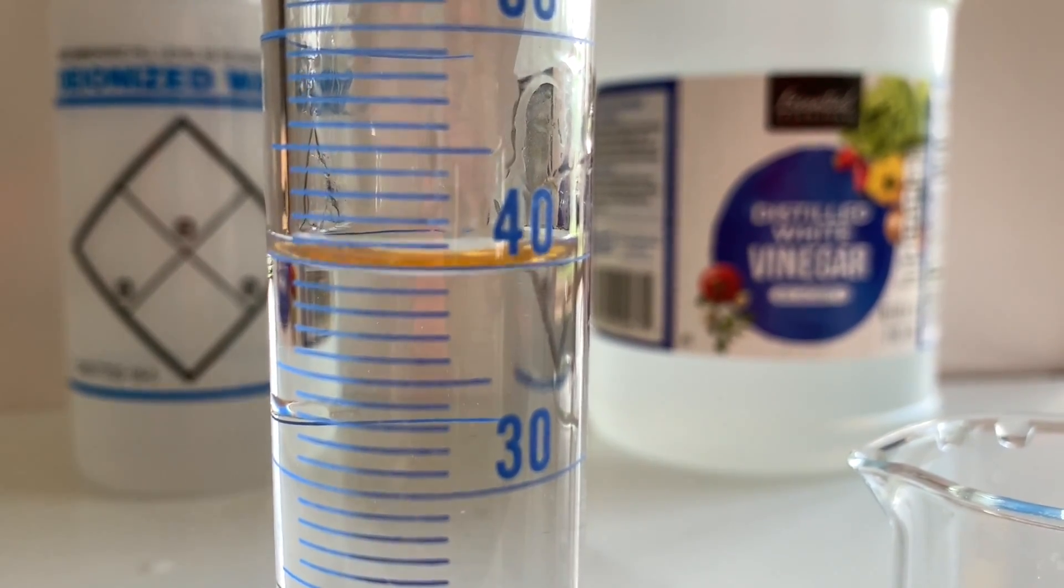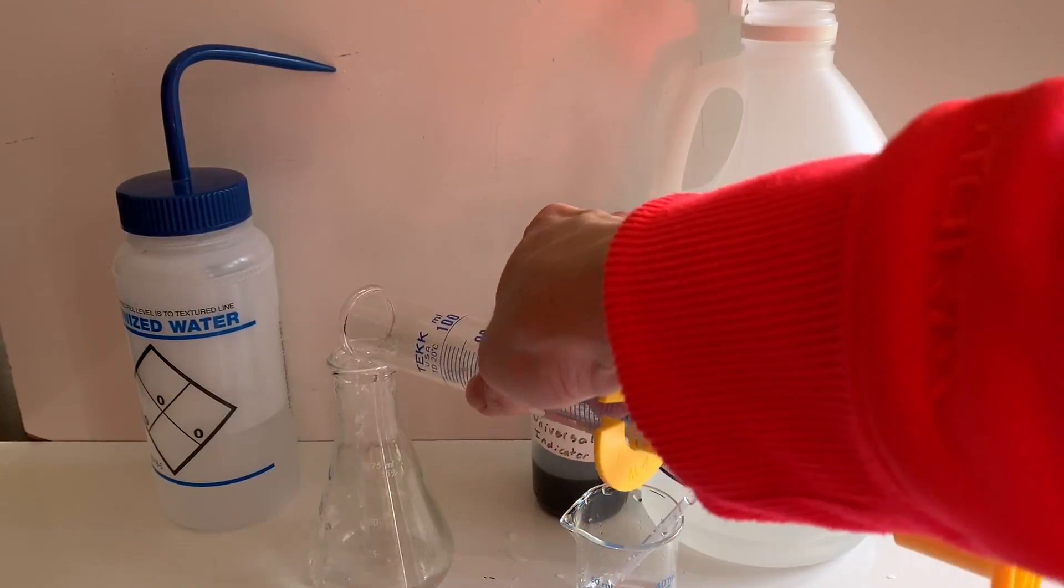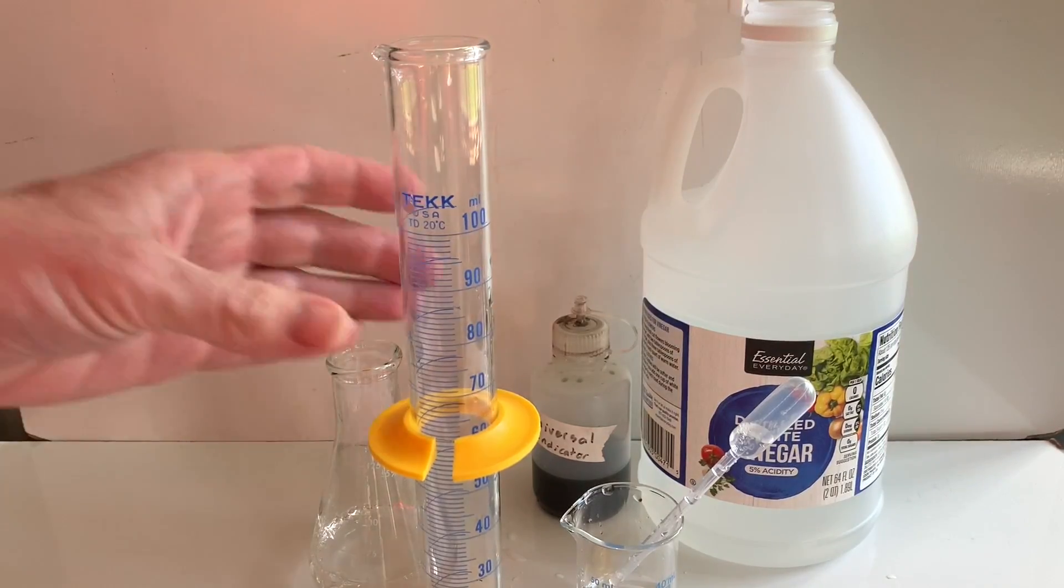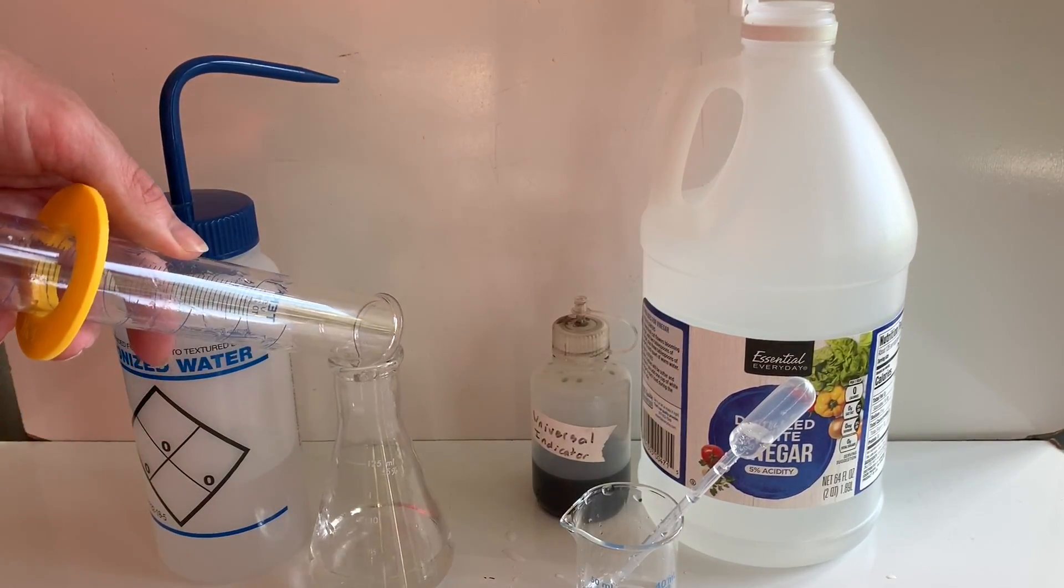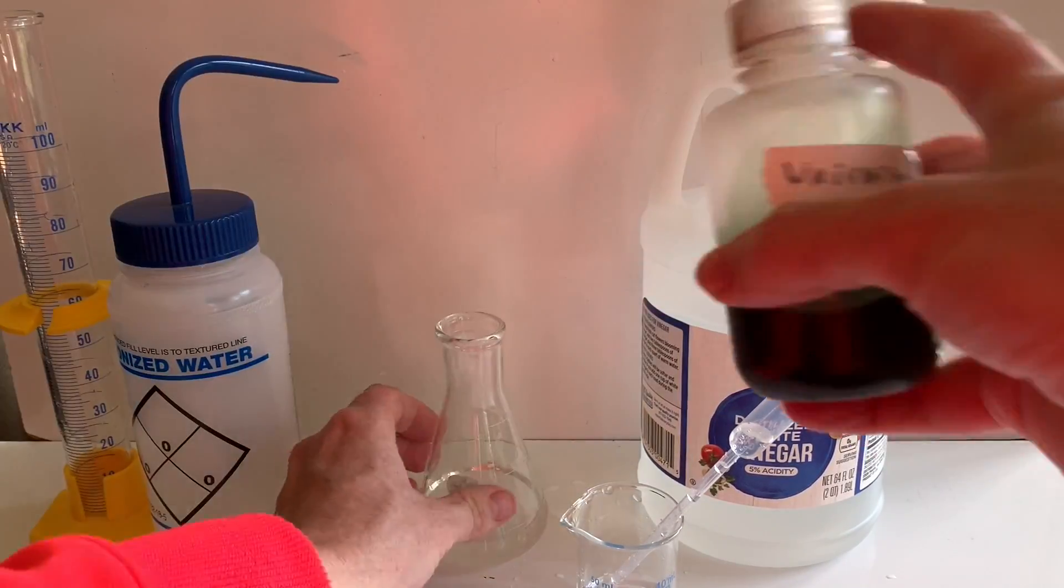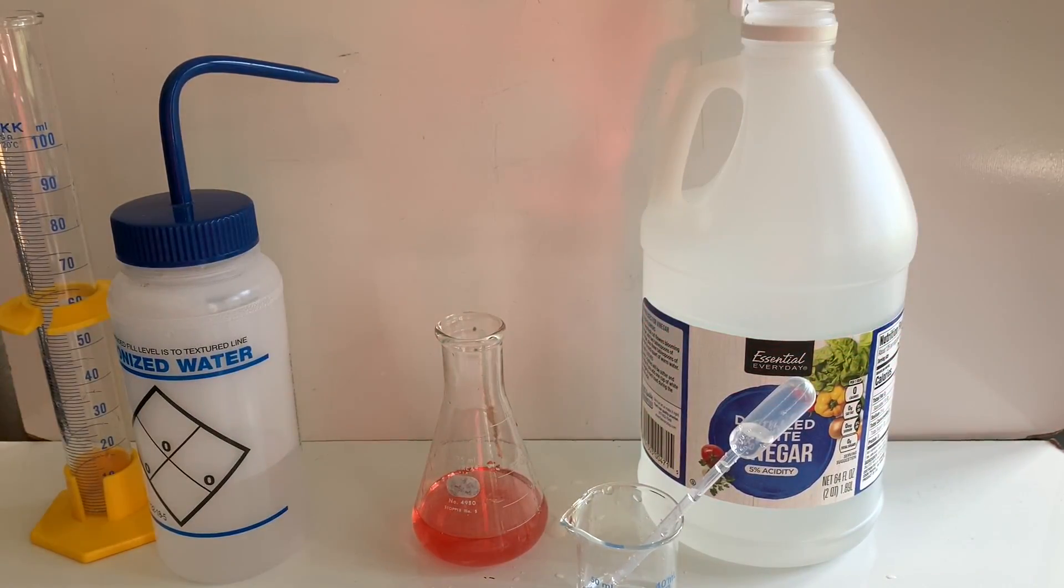The 40 milliliters of the vinegar or acetic acid solution was placed in an Erlenmeyer flask and then I rinsed the graduated cylinder to make sure that all the solution that I measured of the vinegar went into the flask. I added universal indicator which turned red, showing again that vinegar is definitely an acid.